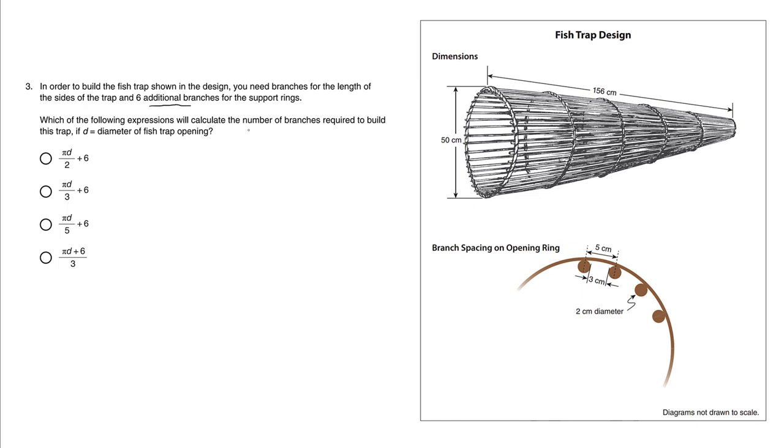So we're talking about the number of branches required to build this. The plus six here refers to these support rings: one, two, three, four, five, six. So it looks like A, B, or C looks like a possible candidate. One giant branch can be curved around into a circle - these are support rings.